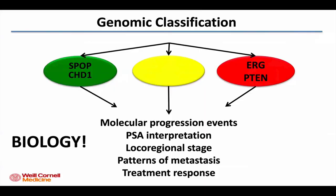To wrap up: by studying the underlying genomic features of these tumors, we can get real insight into the variable biology between them. I'm one of those people who argues that biology is king and biology drives everything. When we think about prostate cancer, biology can drive distinct progression events within tumors, how we think about biomarkers like PSA, how we interpret stage across different tumor types, whether underlying tumor features drive different patterns of metastasis, and how we think about treatment responses.